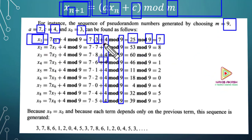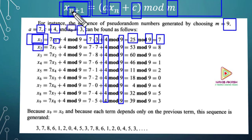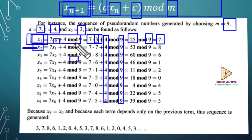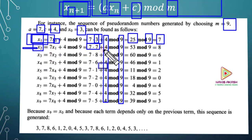25 mod m equals 7. So x1 = 7. Now for x2: x2 equals 7 times x1 plus 4 mod m. x1 is equal to 7, so 7 into 7 plus 4 mod m. That gives us 49 plus 4 = 53 mod m, and 53 mod m equals 9. Wait — 4 mod m gives 4, and the result is 9.